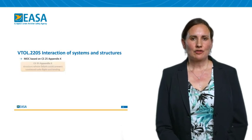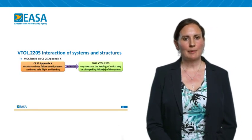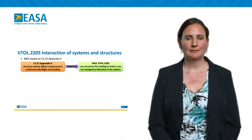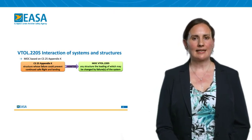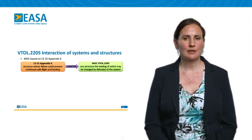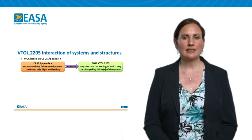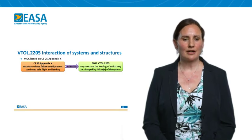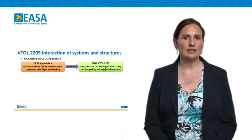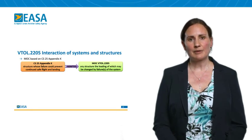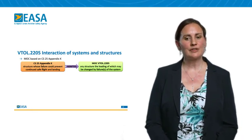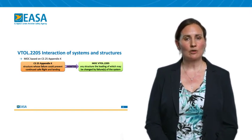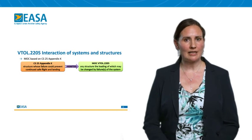The interaction of system and structures means of compliance is based on CS25 Appendix K, as this is the most appropriate material available on this topic. CS25 Appendix K has been adapted specifically for VTOL. One important change is the structure which must be evaluated: for CS25, any structure whose failure could prevent continued safe flight and landing must be evaluated. For VTOL, any structure the loading of which may be modified by the failure of the system should be evaluated under the requirement.